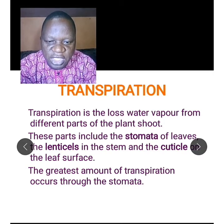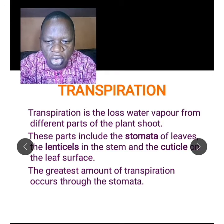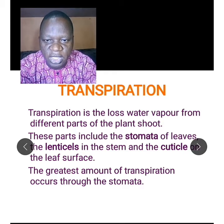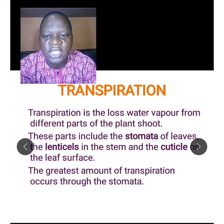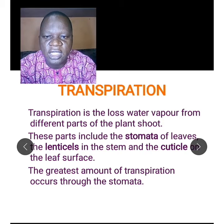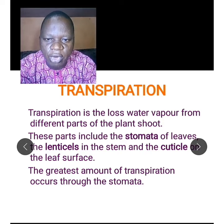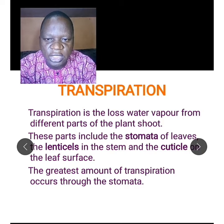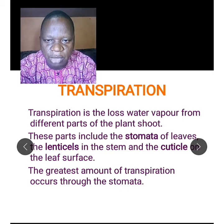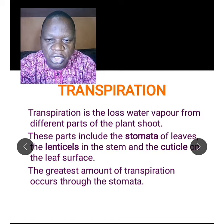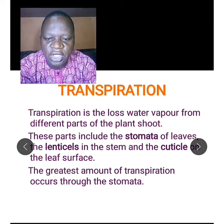The greatest amount of transpiration occurs through the stomata present in the leaf. This is because the water absorbed from the soil goes directly into the leaf — the water does not really stay in the stem. That is why the greatest amount of water loss in the plant takes place through the stomata present on the leaves.